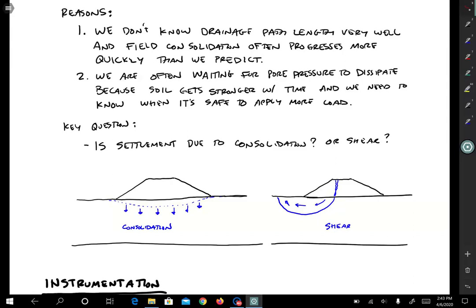The second reason is perhaps more important. We're often waiting for pore pressure to dissipate. So we apply some loading condition. We're waiting for the pore pressure to dissipate because as pore pressures dissipate, the soil is becoming denser. Water is being expelled from the void space and denser soil is stronger. So the soil is getting stronger as it consolidates.